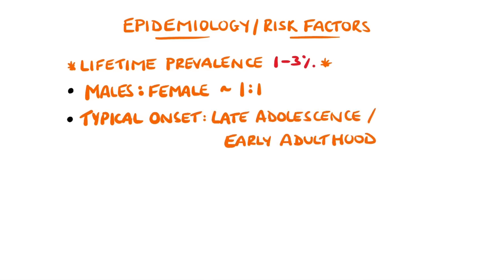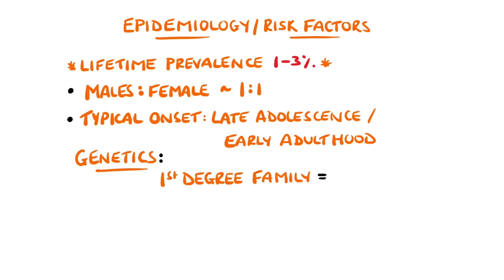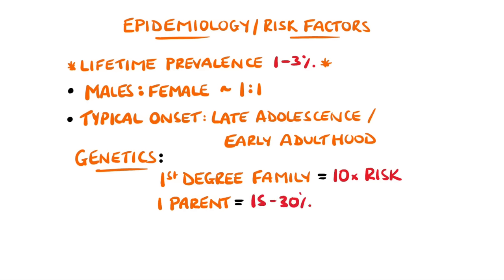The exact cause of bipolar disorder is not known, but multiple factors are thought to contribute. Genetically, there is a link between a family history and increased risk, with studies quoting up to a 10x risk if a first-degree family member is affected. If one parent is affected, the likelihood of developing the disorder is 15 to 30 percent, rising to 50 to 75 percent if both parents are affected.